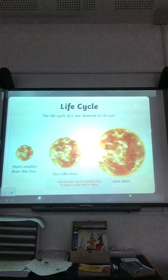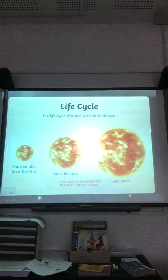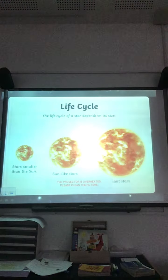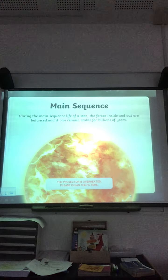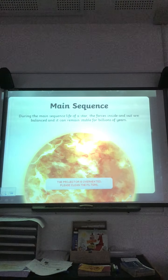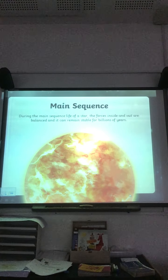The life cycle of a star depends on its size — stars smaller than the sun, sun-like stars, and of course giant stars! During the main sequence, the forces inside and outside are balanced, and a star can remain stable for billions of years. That is a massive number — billions of years!